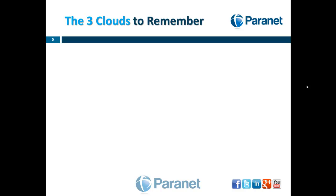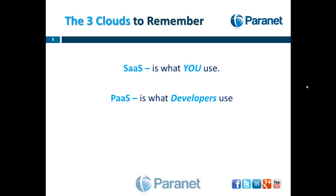So wrapping up, what are the three cloud service types you need to remember? Software as a service is really what you use as a consumer of these applications. Platform as a service is what developers consume. Infrastructure as a service is really what IT or corporate departments use.